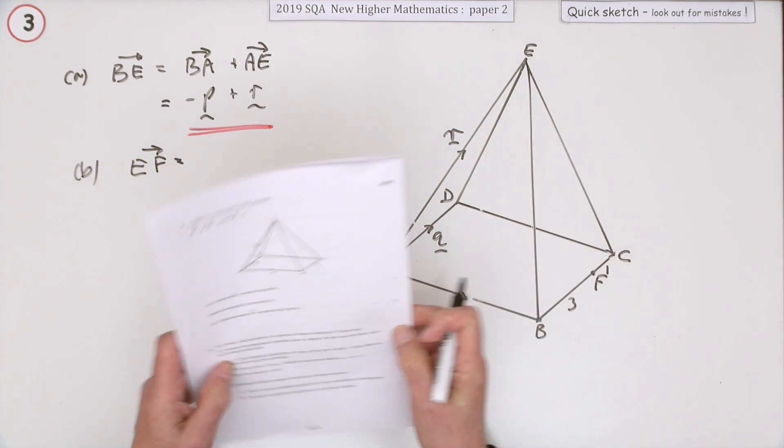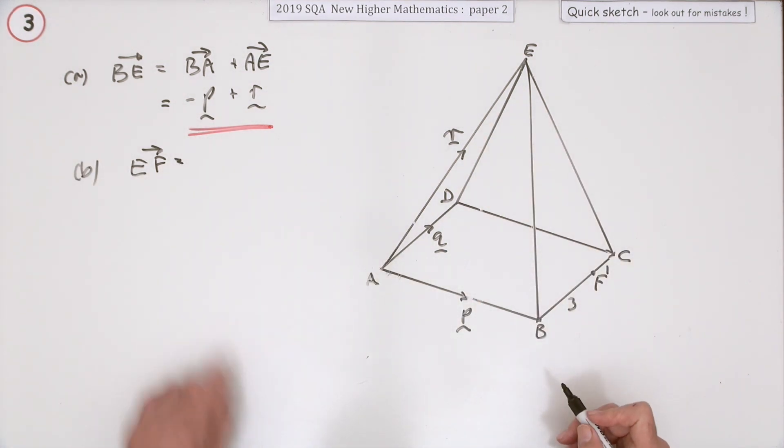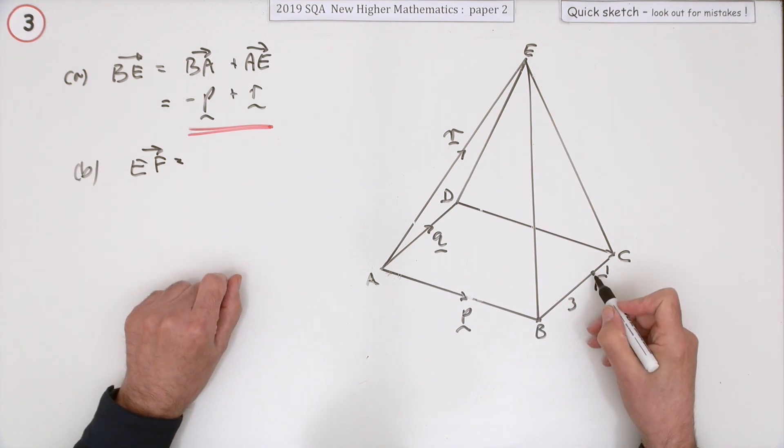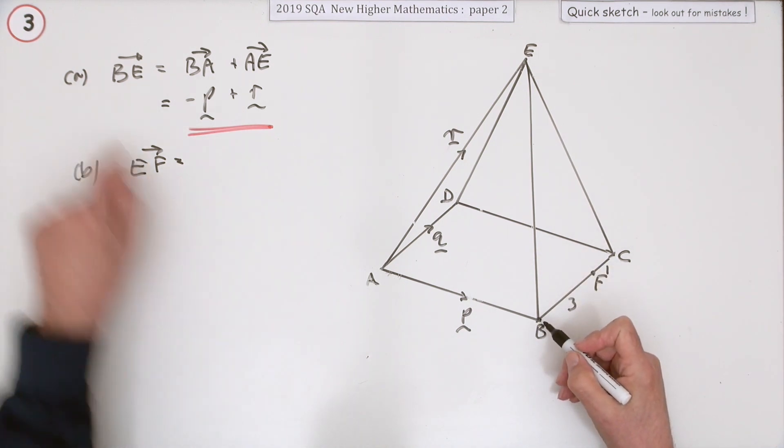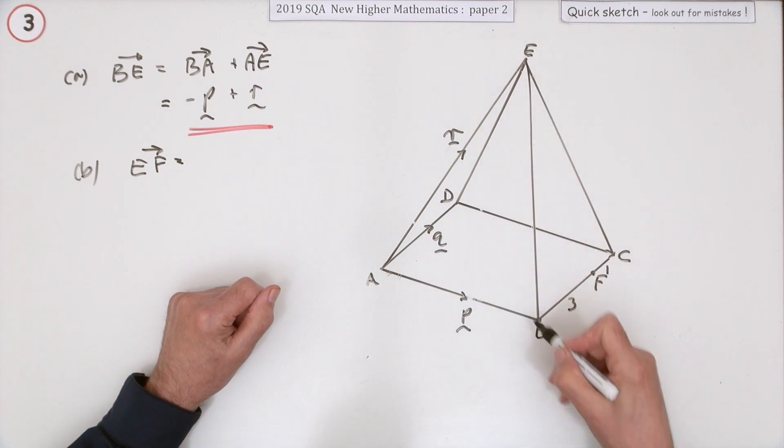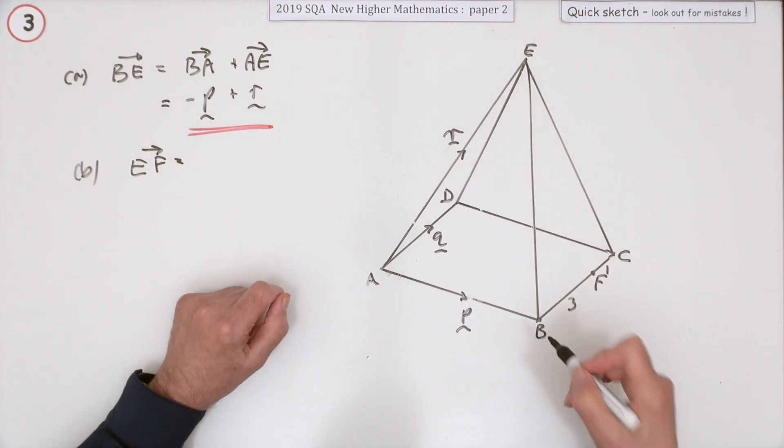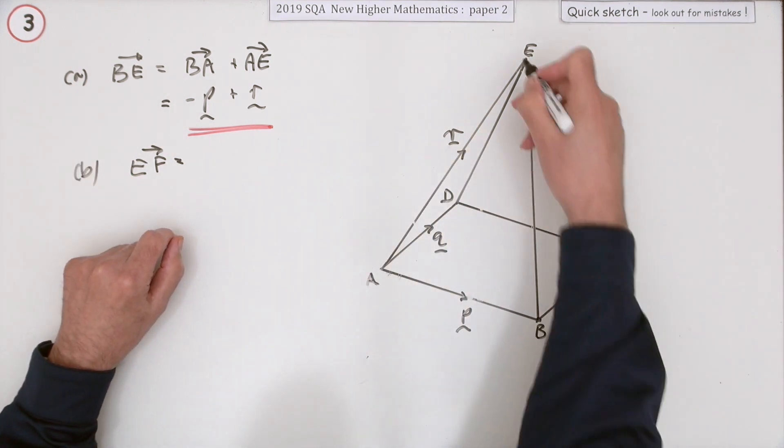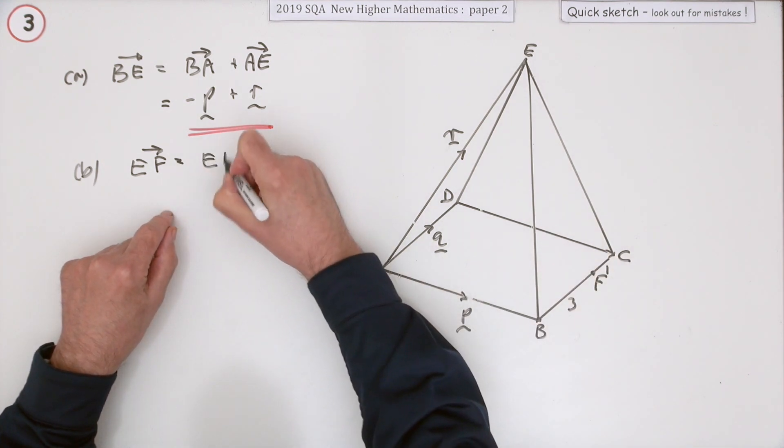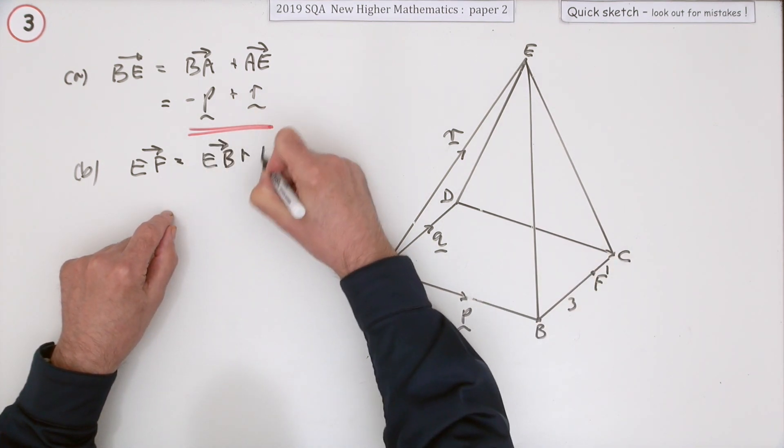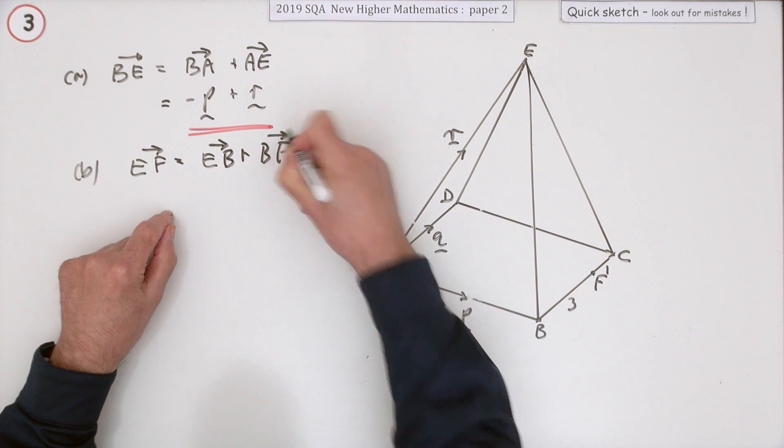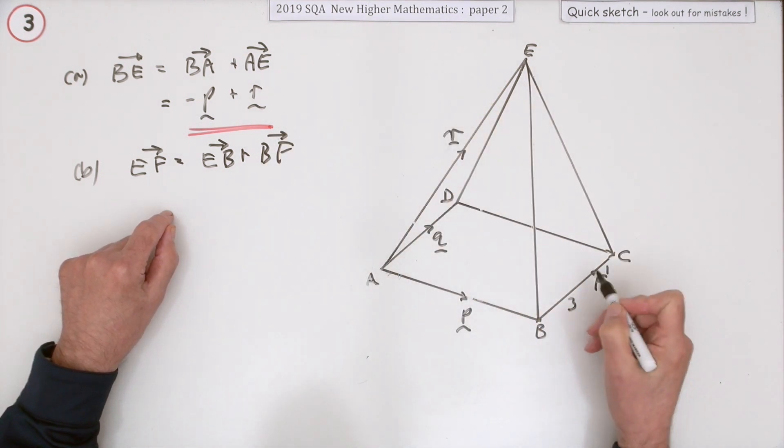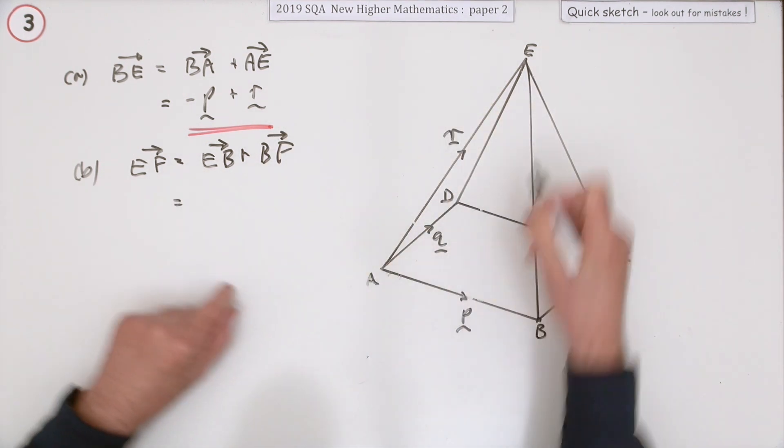Now for two marks. Well, that simply means you start at E and finish at F. Well, you've done part A I suppose and maybe they'll want you to follow that. You can follow any route you like, but I could go from E to F by going E to B and then going B to F. That would certainly take me there. E to B, B to F.